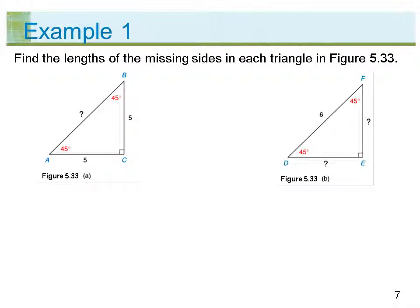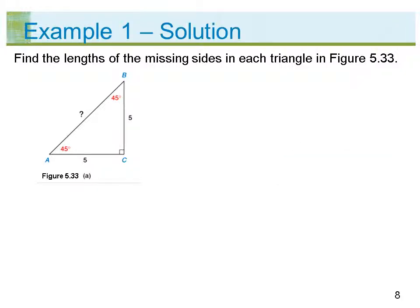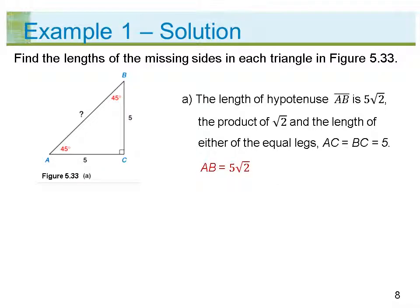Find the lengths of the missing sides in each triangle in figure 5.33. The length of hypotenuse segment AB is 5 square root of 2, which is the product of the square root of 2 and the length of either equal leg. Therefore, length AC equals length BC equals 5, and length AB equals 5 square root of 2.